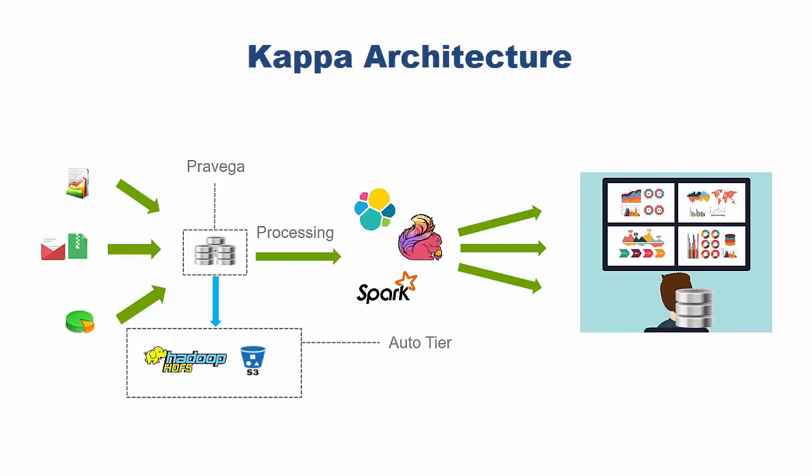With the Kappa architecture, as your data comes in, you have it in one queuing system or storage device. You can do your real-time processing and push that data out to your dashboards, web applications, or however you're consuming it. You can also do distributed search — using Elasticsearch, Solr, or similar — supporting real-time search as well. You might use Spark and Flink for real-time analytics, but you also want to do batch processing. Instead of creating a whole other tier, you do it within the same queuing system.